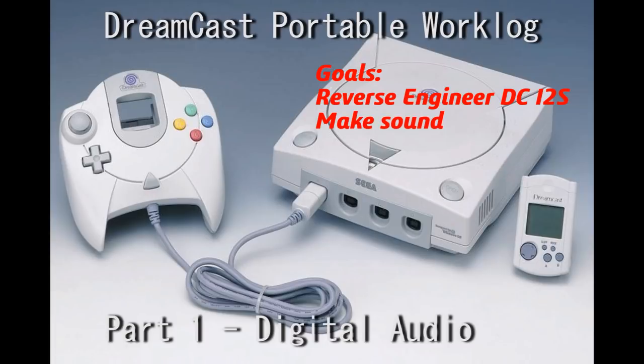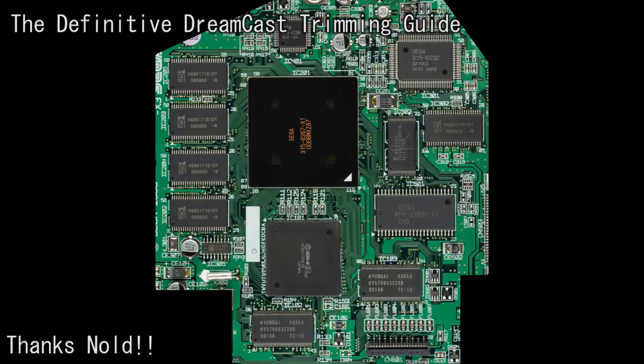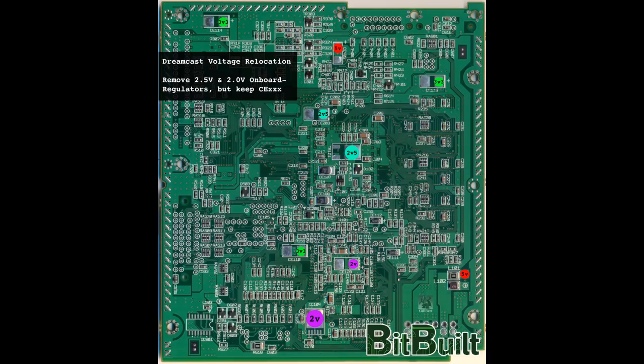Before I can start building my Dreamcast Portable, I need to design some assets that'll make it easier for me. So when you trim the Dreamcast, you normally cut off the built-in audio deck and then relocate it afterwards. But it's a lot simpler if I can just bypass the audio amp entirely and use a digital audio amp rather than an analog one. This will give it better audio quality and actually save space in my case.